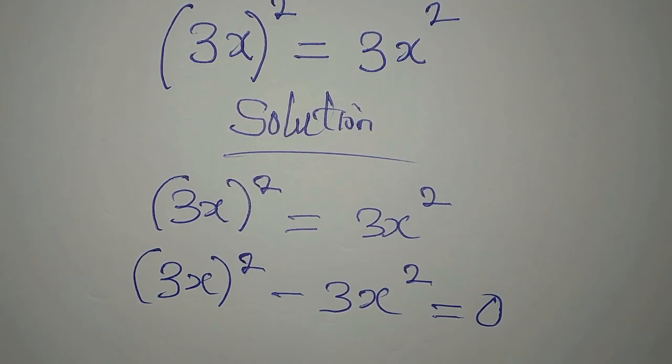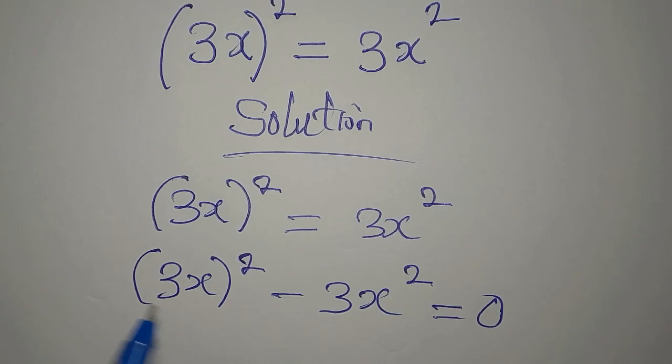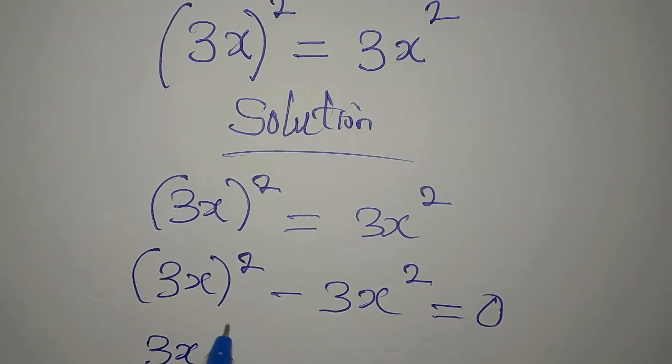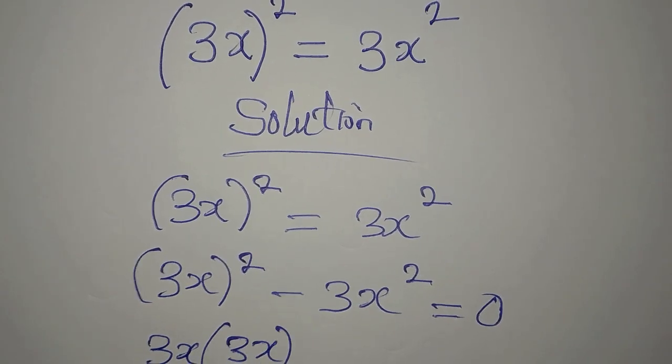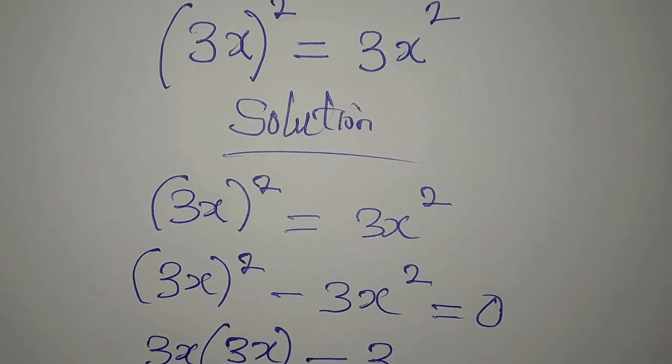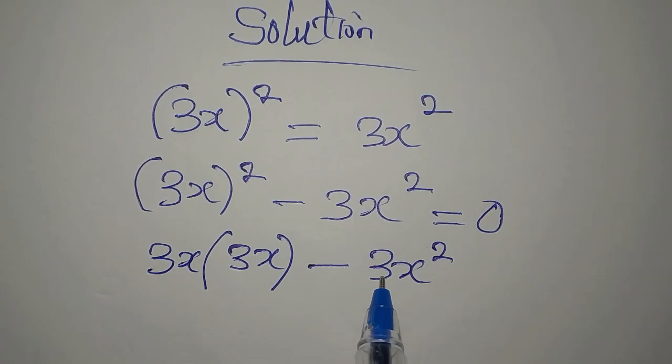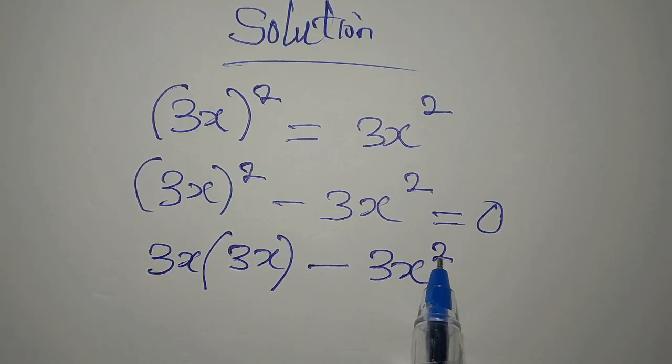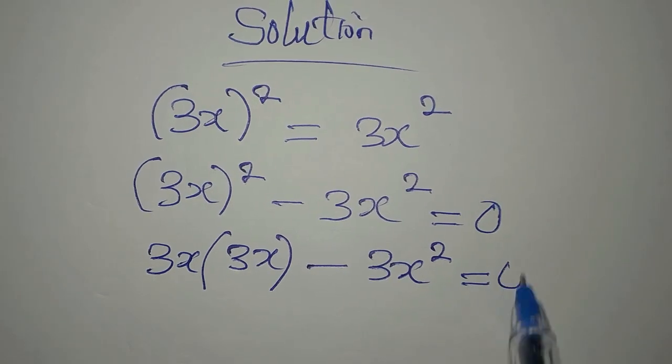But the question is, do you think if you subtract them you're going to have zero? No, because in this place we're having 3x multiplied by 3x, and on the other hand we have 3x². From here, this 3 has no business with the power, so everything is equal to zero.